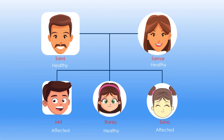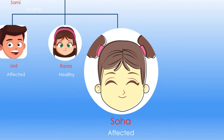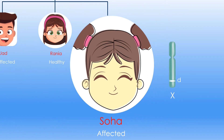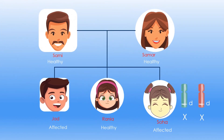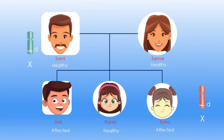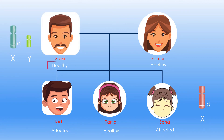If the allele of the disease were located on the non-homologous segment of X, Saha, who is affected, should have the genotype X^D X^D. This means she inherited X^D from her father, who should then have X^D Y as his genotype and consequently be affected. But the pedigree shows he is normal, so this is not the case.